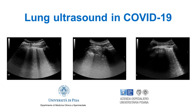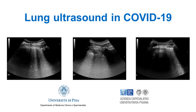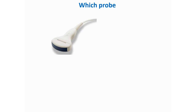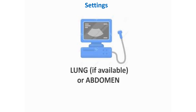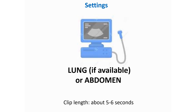Good morning and welcome to this tutorial on how to do a lung ultrasound exam in patients with COVID-19. The convex probe is the most universal probe for lung ultrasound. The linear probe allows better definition of the pleural line and subpleural space, but the convex probe is absolutely enough to visualize everything needed for a complete exam. Use the specific lung preset if your machine includes it, otherwise you can use the abdominal preset.